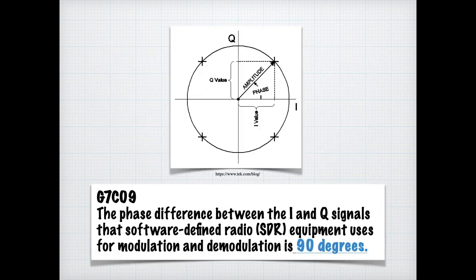In mathematics, quadrature is the process of constructing a square with an area equal to that of a circle or another figure bounded by a curve. The IQ is what is referenced by or meant by the quadrature or quadrature is IQ. For the exam, you need to know that the phase difference between the I and Q signals that software-defined radios equipment uses for modulation and demodulation is 90 degrees.